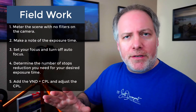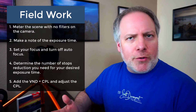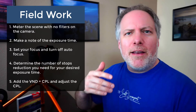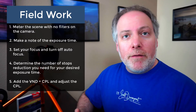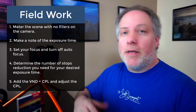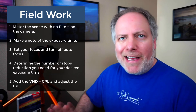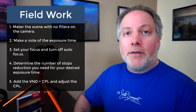The field workflow goes like this: no filters on the camera, set your focus, meter the scene, and make a mental note of what the metering is saying. Let's say you're shooting in aperture priority at f8 and you get a certain exposure time reading. You make a mental note and decide how many stops of filters you want to add to get your exposure time to a slower speed. Set your focus point, turn off autofocus, then add the filters, and start adjusting the polarizer until you've got your exposure time where you want it.